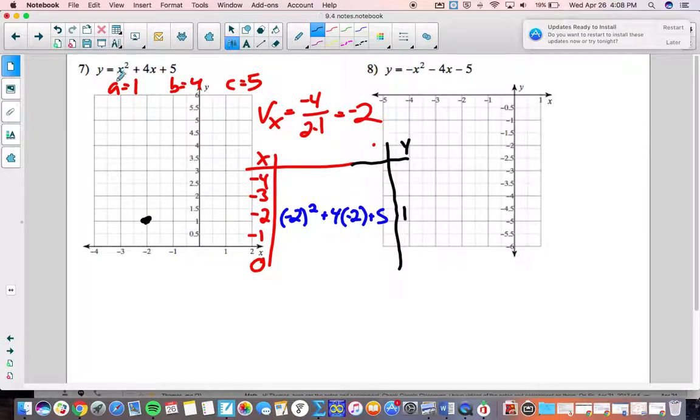And because our leading coefficient is positive this will be a smiley face so our vertex is the bottom. So plug in negative 3 in place of negative 2 and you will get I believe 2. That means you'll get a 2 down here as well.